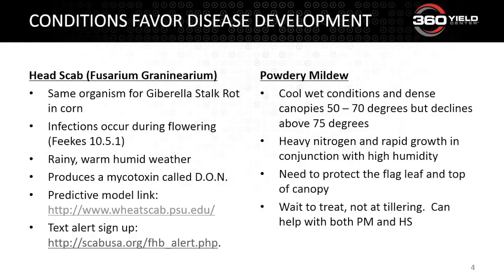Moving further south, a lot of that wheat is moving into Feekes 10.5.1, which is right at head exertion. Make sure you are monitoring and we'll talk about how to treat in those areas. The disease itself — head scab — if you get infection on the head, it will produce a mycotoxin called DON, and that is a bad dude. You do not want to get head scab and have that infection in your wheat.